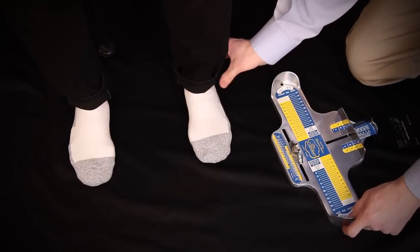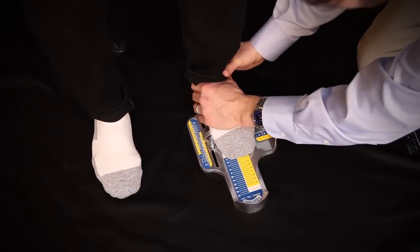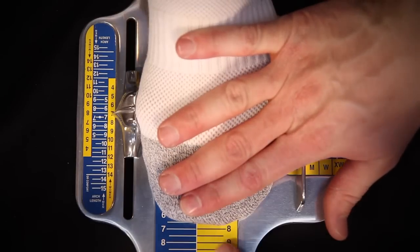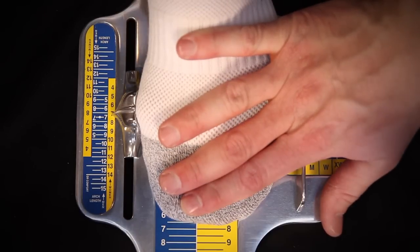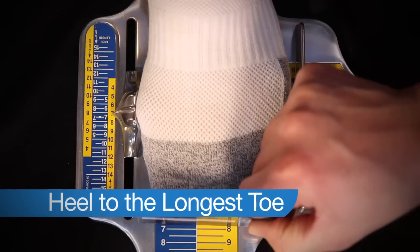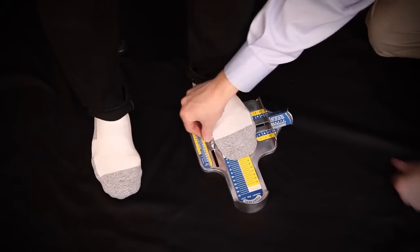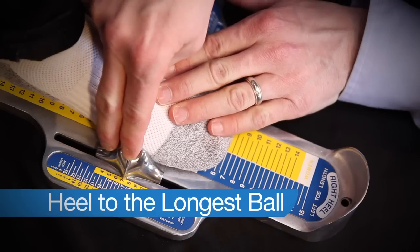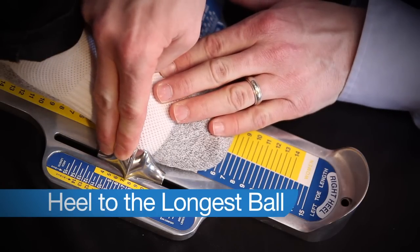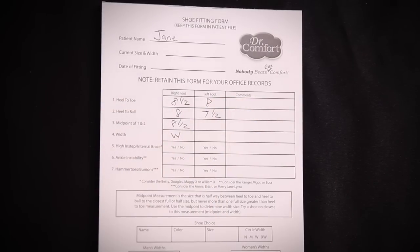Jane walks in place and this time we will use the other side of the Brannock device for her left foot. Again, I properly place her foot in the Brannock device, taking the first measurement, which is the heel to the longest toe. In this case, heel to the longest toe is a size eight. I could check it either method. The next measurement is the heel to the ball or the arch length and that happens to be a seven and a half with Jane. So the midpoint measurement for these two will be a size eight.